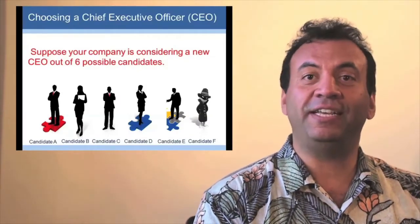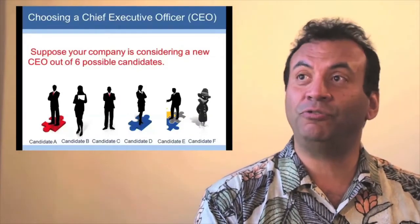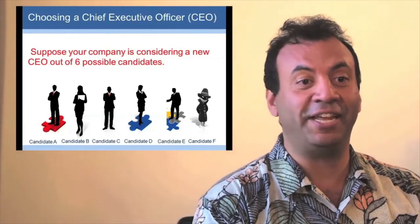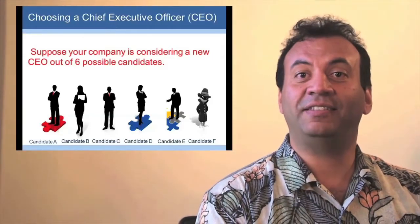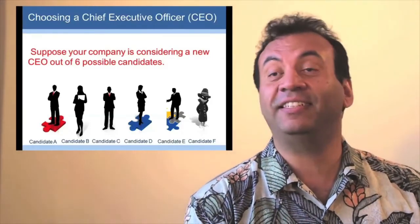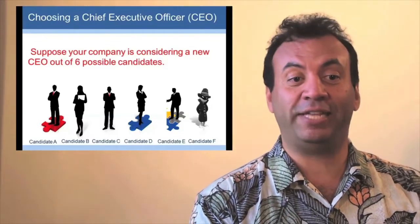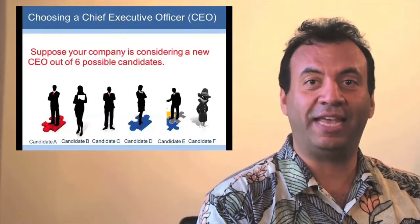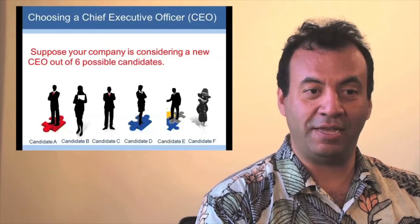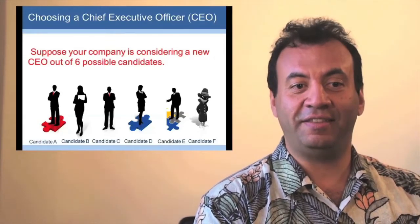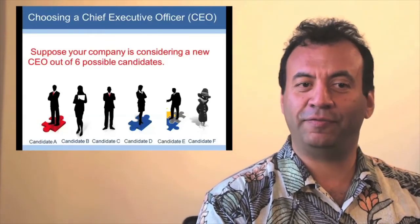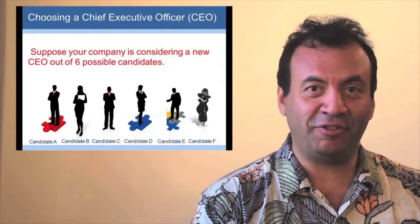So let's take this example. Suppose a company is choosing its new chief executive officer, the CEO. They send out and get six applicants, six possible candidates for the CEO: Candidate A, B, C, D, E, and F. Now, F looks a bit strange, you might see.